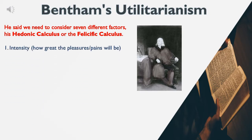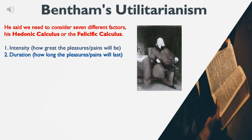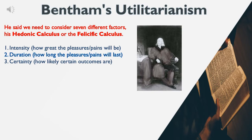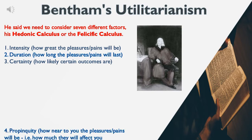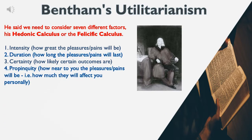1. Intensity — how great the pleasures or pains will be. 2. Duration — how long the pleasures or pains will last. 3. Certainty — how likely certain outcomes are. 4. Propinquity — how near to you the pleasures or pains will be, i.e. how much they will affect you personally.